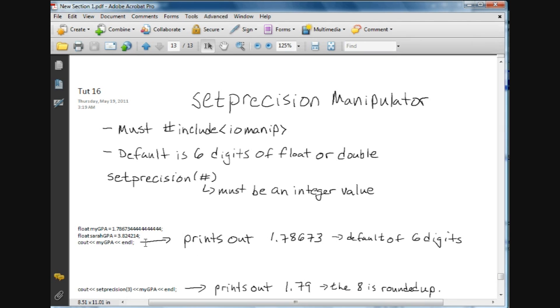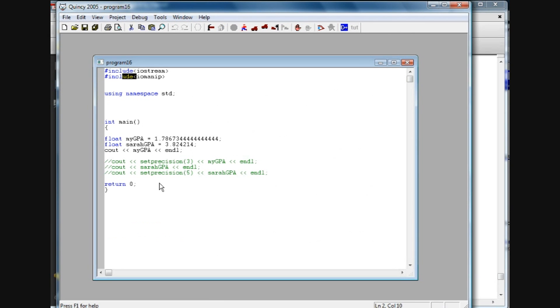So what I've done in this program is I've created a float named myGPA and given it a pretty close to accurate value of what my current GPA is: 1.786 blah blah blah. And then I've got our honor student here, Sarah, who's got a bright future with that 3.82 GPA. When I C out myGPA, that float variable, just by default it's going to print six digits. So we're going to get this value here. I've commented out this bottom portion, so we'll just C out myGPA.